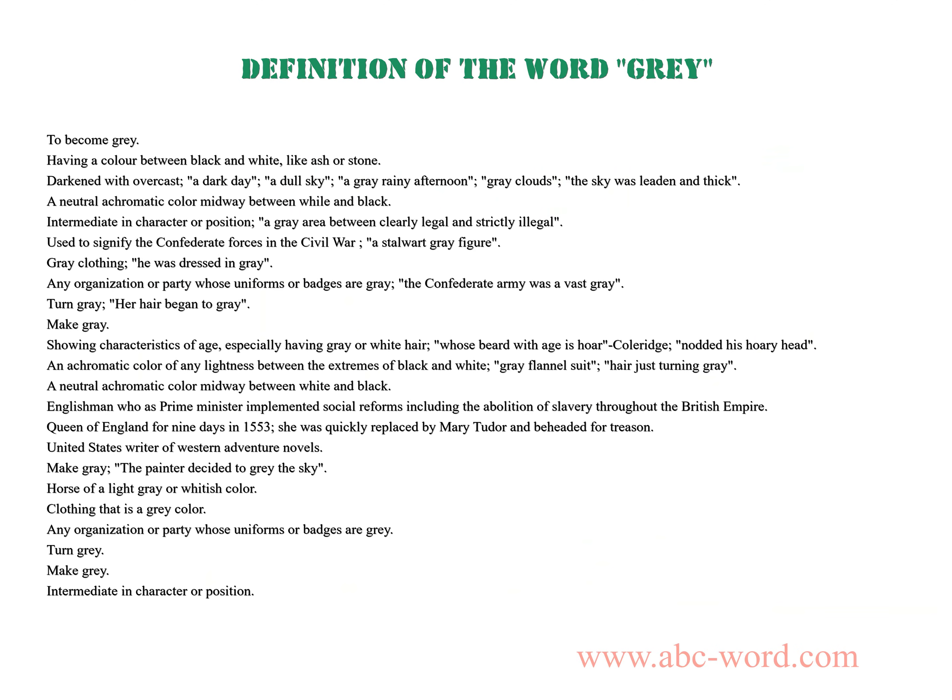After watching this video you will find out what the word gray means. To become gray: having a color between black and white, like ash or stone. Darkened with overcast — a dark day, a dull sky, a gray rainy afternoon, gray clouds. The sky was leaden and thick. A neutral achromatic color midway between white and black.